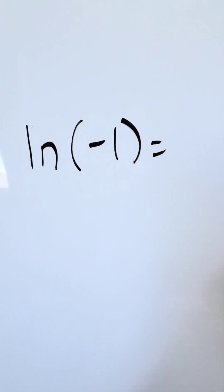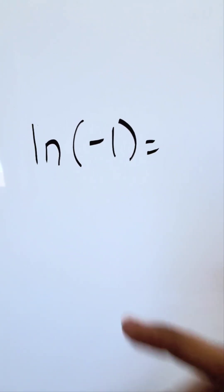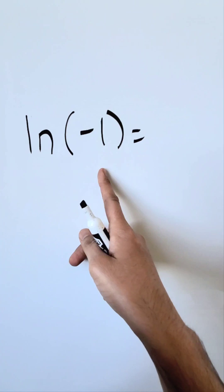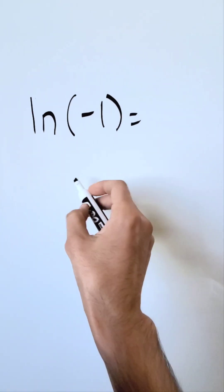We know that natural log of 1 is equal to 0, but what's natural log of minus 1? What is the end result? Think about your Euler's formula.